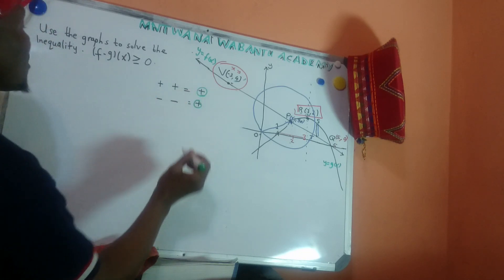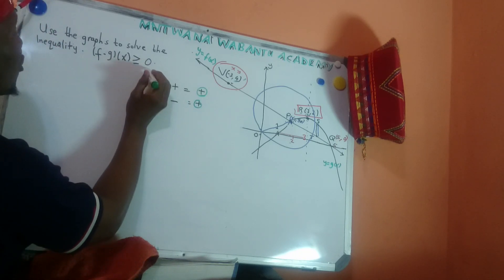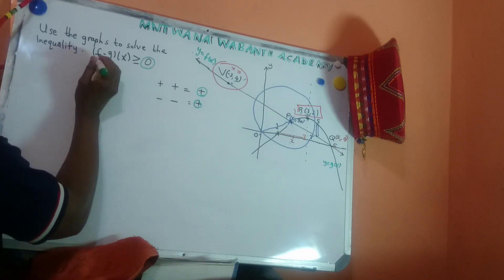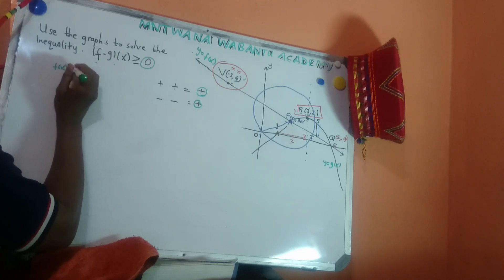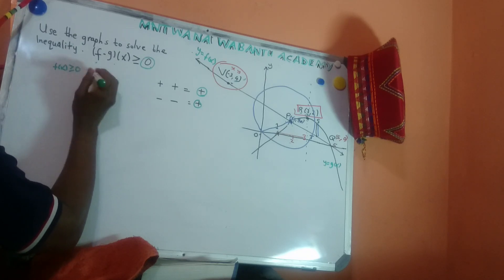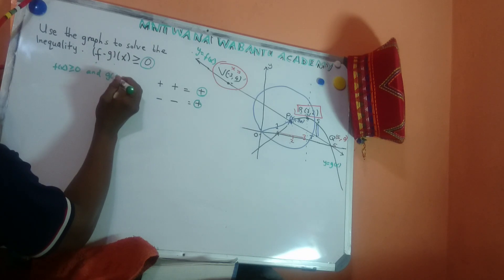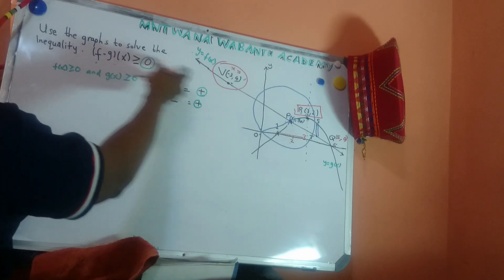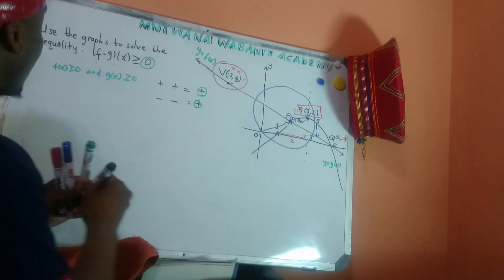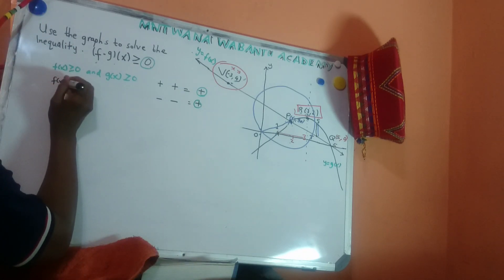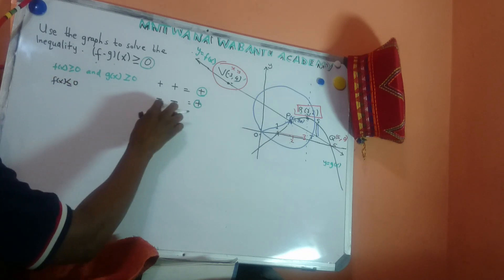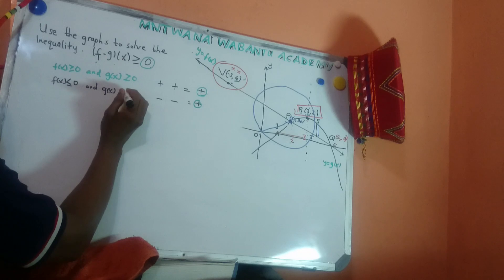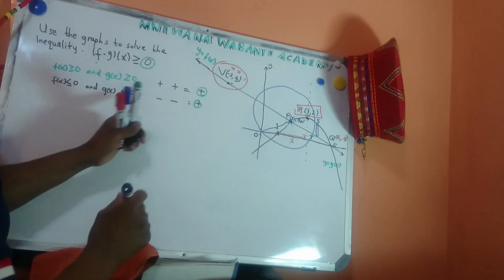For us to get a product greater than zero, either f(x) has to be positive and g(x) has to be positive — so f(x) ≥ 0 and g(x) ≥ 0 — or f(x) is less than or equal to zero and g(x) is also less than or equal to zero, meaning both are negative, which still gives us positive.